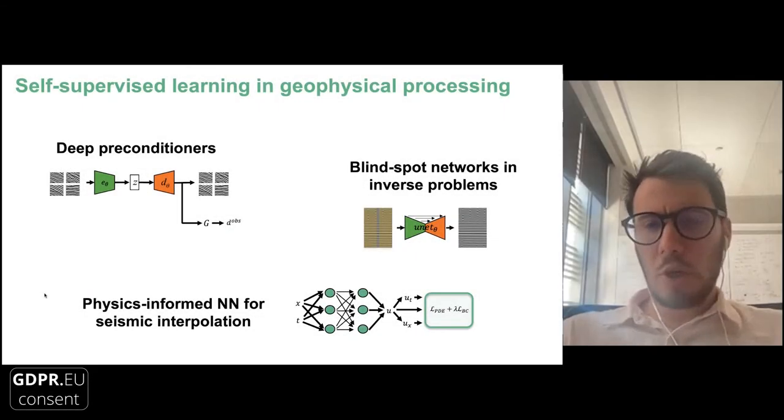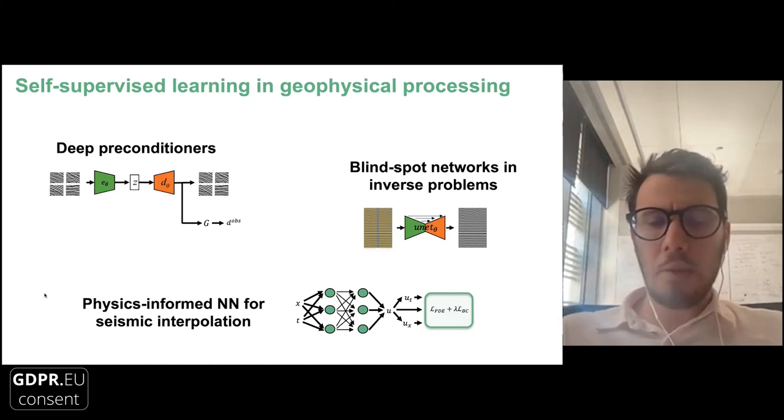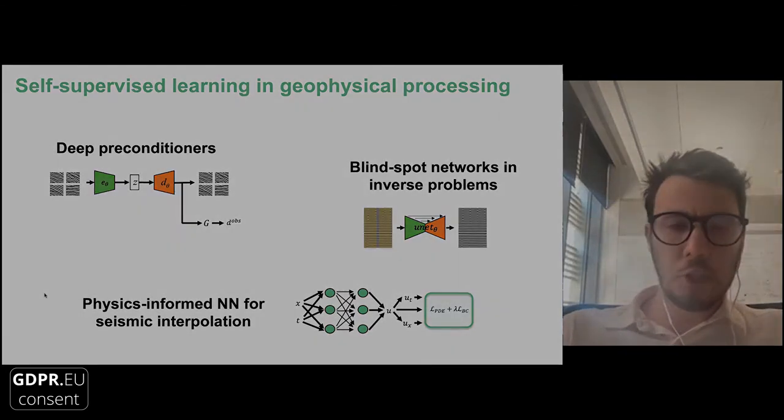This is really the outline of my talk. I'll divide the rest of my talk in three parts. The first one, we'll talk about what we call deep preconditioners. The second one will be how we use blind spot networks in a framework of solving an inverse problem. Finally, we'll talk also a bit about physics-informed neural networks, which I will say loosely speaking can still be seen as a self-supervised approach. Because you're not providing any input-output training pairs, the self-supervision comes from the knowledge of the physics you put in your loss function.